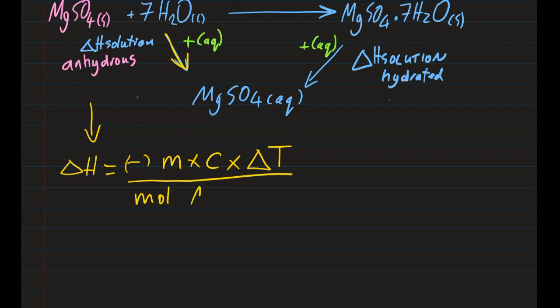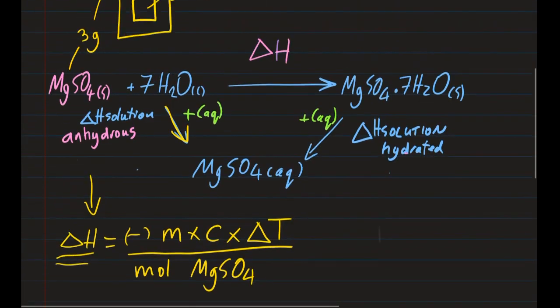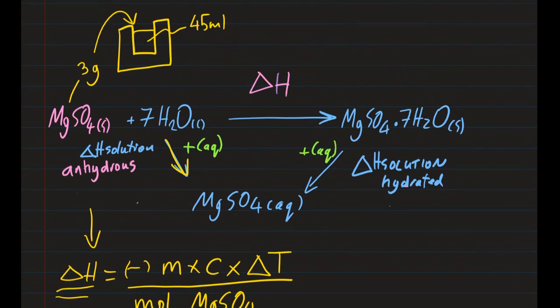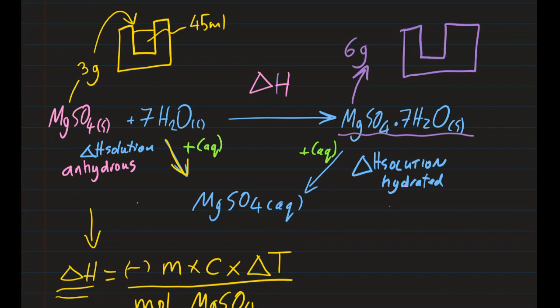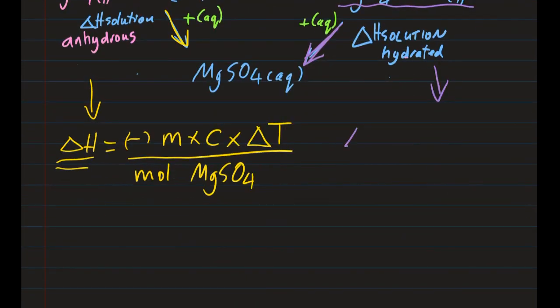That's the specific heat capacity of water, times the temperature change, divided by the moles of anhydrous magnesium sulfate — giving Delta H for the first reaction. For the second reaction, I took six grams of the hydrated crystals and put them into another insulated beaker with 45 milliliters of water. A similar Delta H calculation gives the enthalpy for that arrow.